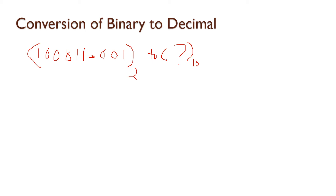Shortcut method for the integer part: assign powers of 2 starting from right — 2 power of 0, 2 power of 1, 2 power of 2, 2 power of 3, 2 power of 4, 2 power of 5 — corresponding to each binary digit position.